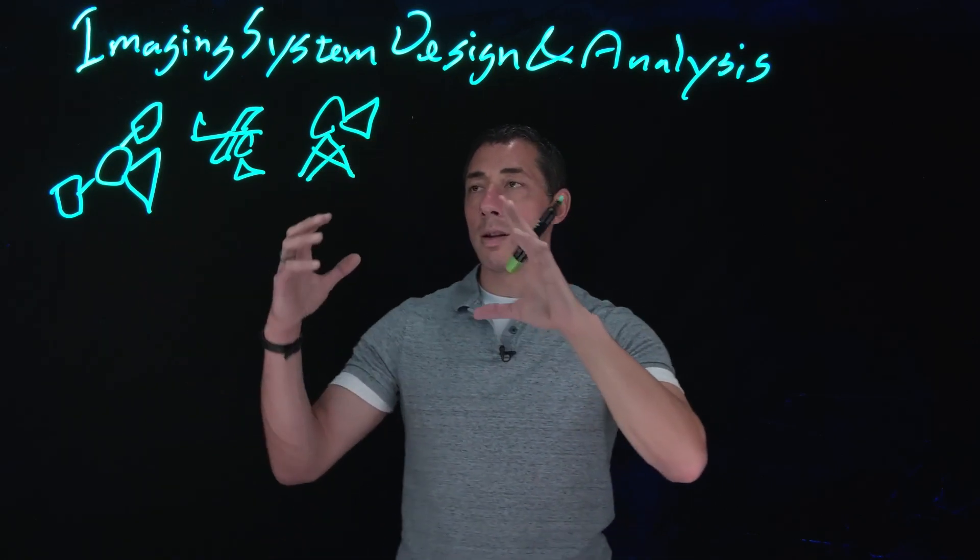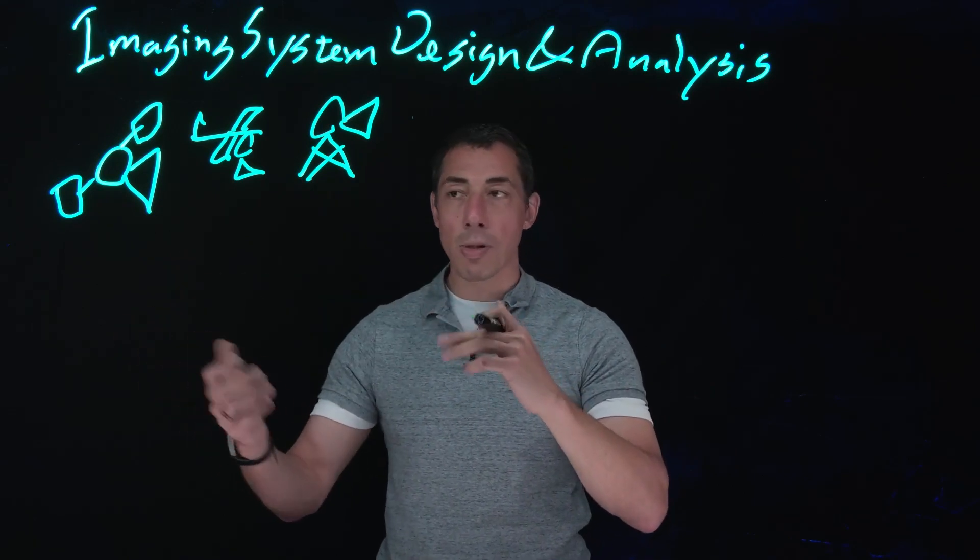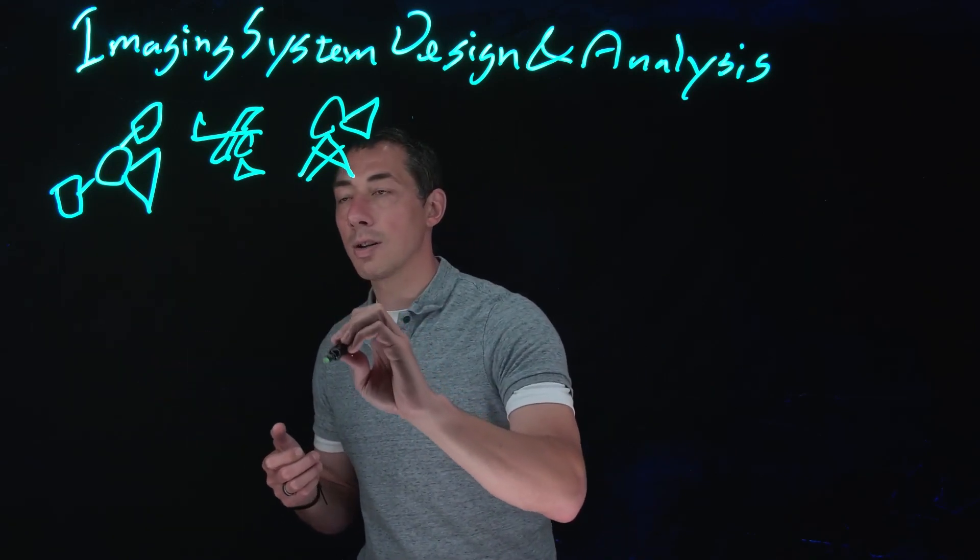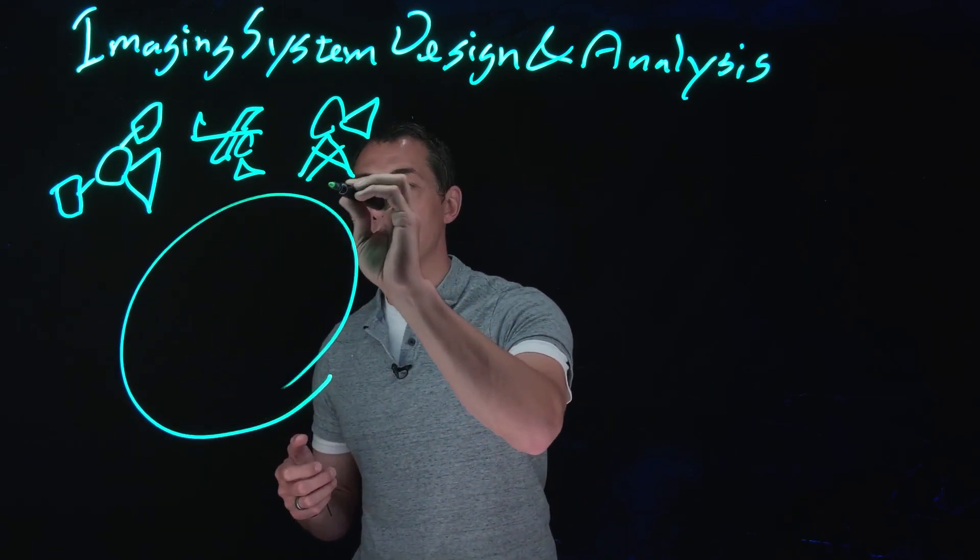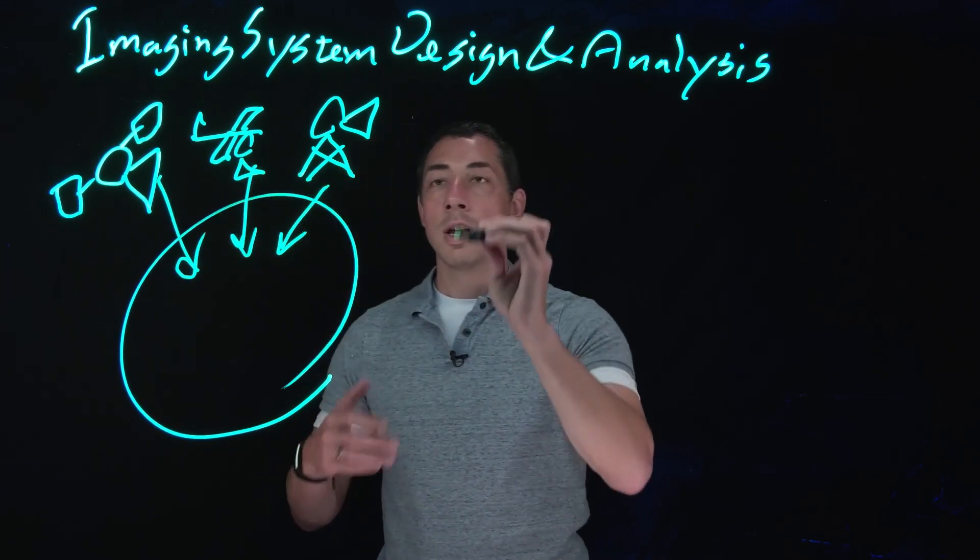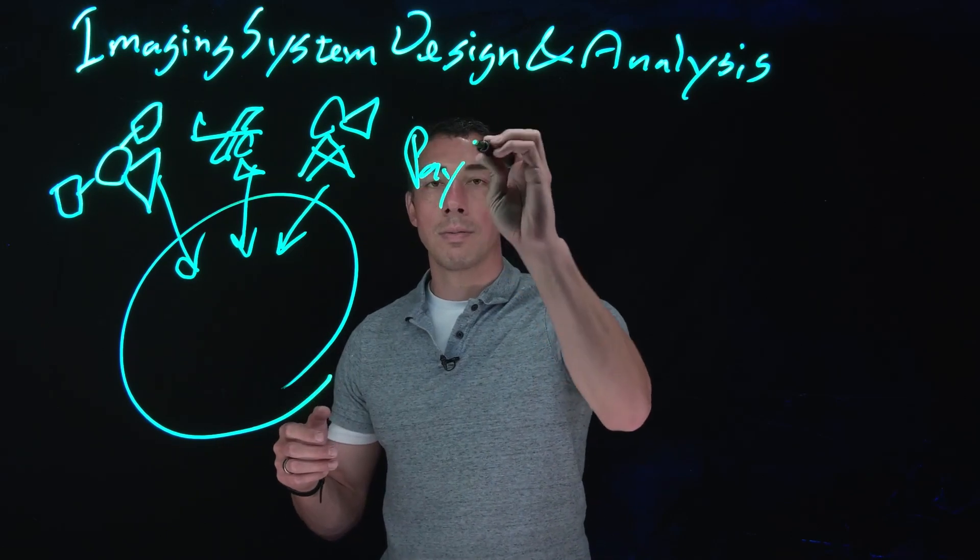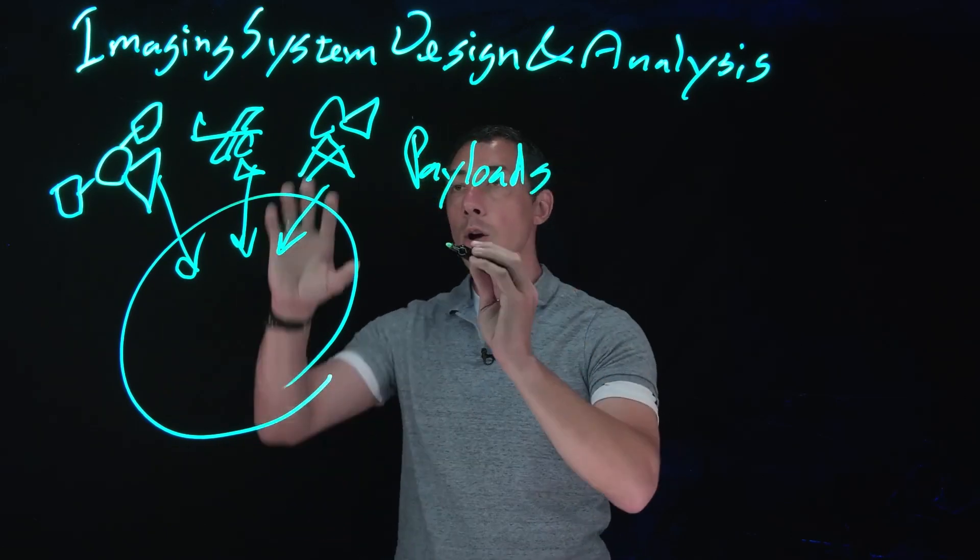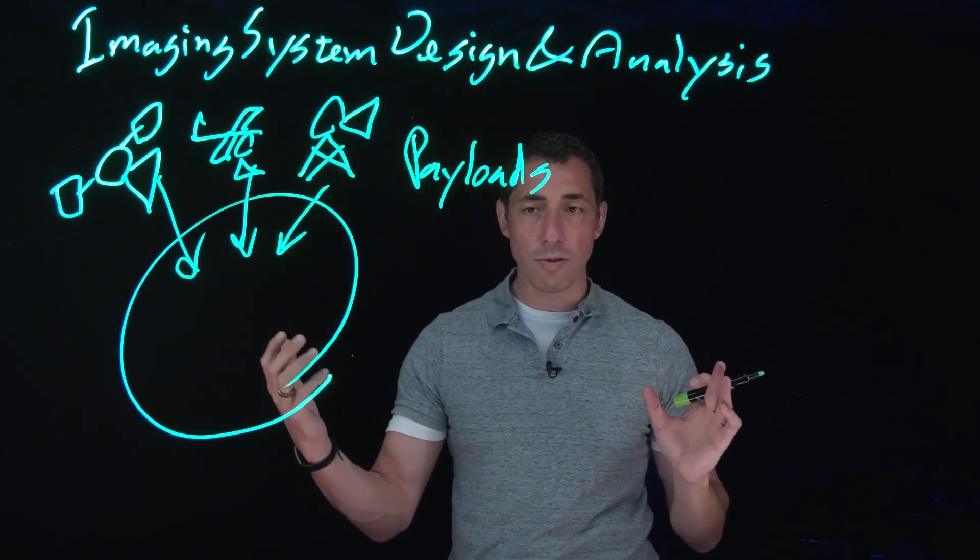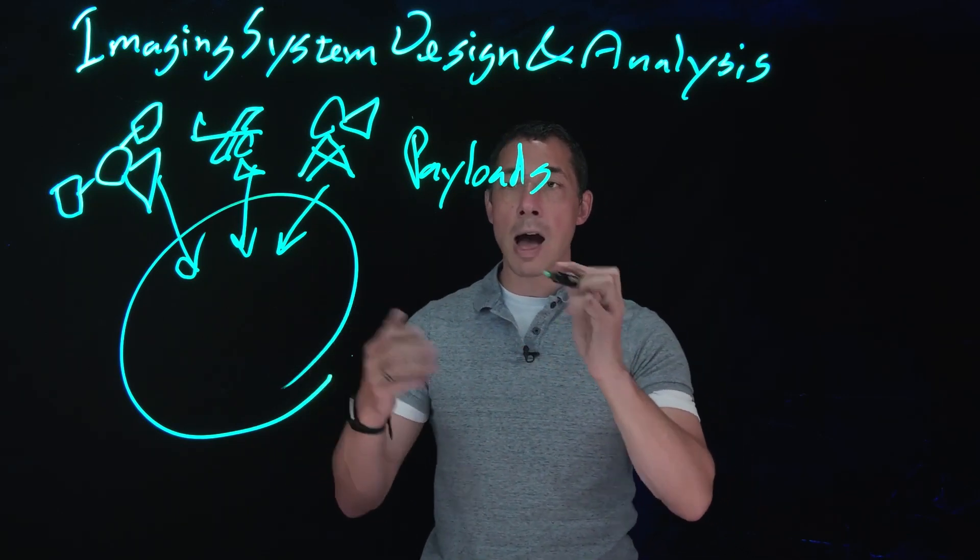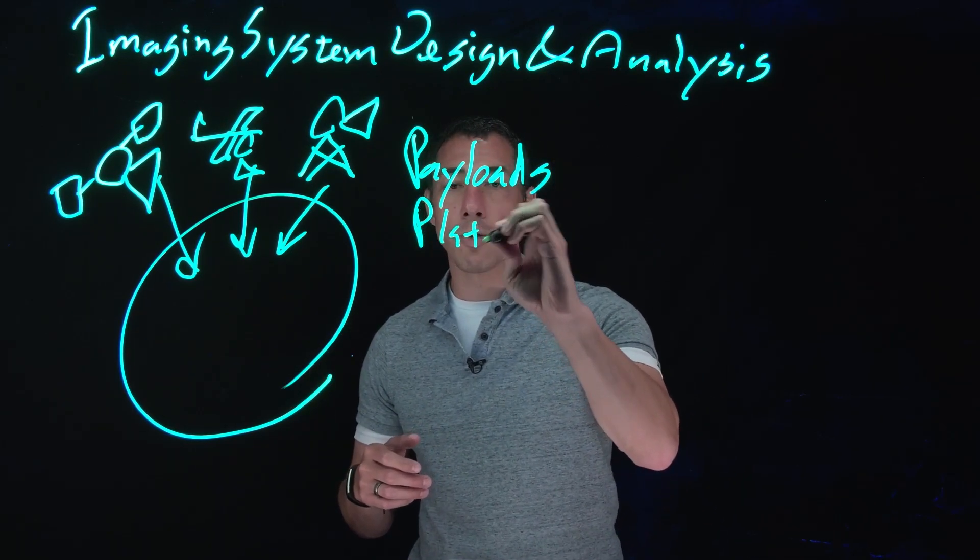And all of these different imaging systems on different platforms are going to be looking at some type of target of interest. So we're going to say we're all looking down at the earth and we're taking some type of pictures. So you have all your different payloads, and that can be different configurations. You can have multiple options of payloads. You also can attach each of those to a platform.